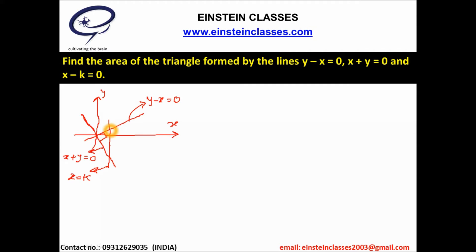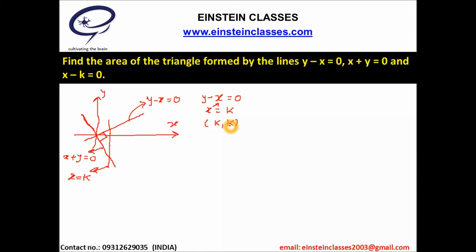We are going to find the coordinates of the two intersection points. Using the distance formula we can then find the base and the height. To find the point of intersection of y minus x equal to 0 and x equal to k, we put x equal to k, giving y equal to k. Hence this vertex of the triangle is k comma k.